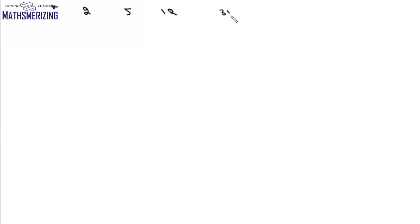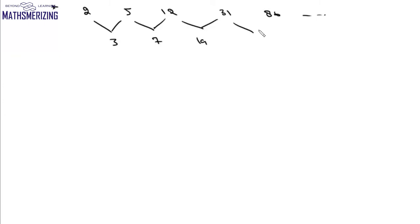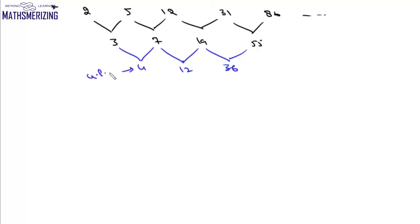Let us take another example. We need to find the sum of the first 8 terms of the sequence 2, 5, 12, 31, 86. First we find the differences: 3, 7, 19, 55. This is neither AP nor GP. Taking successive differences: 7 minus 3 = 4, 19 minus 7 = 12, 55 minus 19 = 36. This successive difference is in GP with common ratio 3.